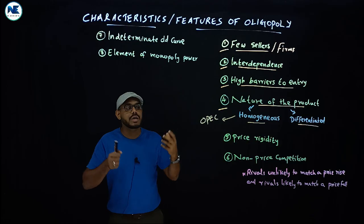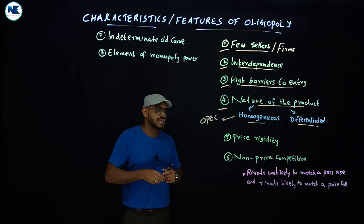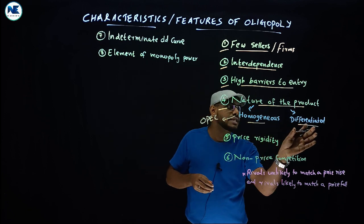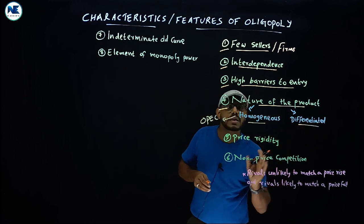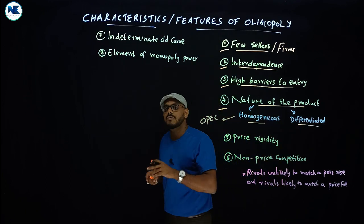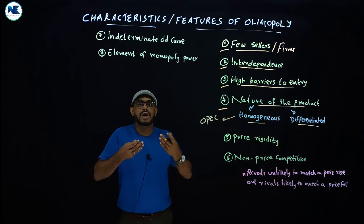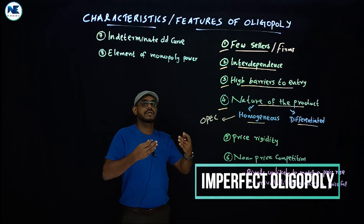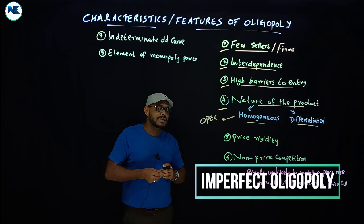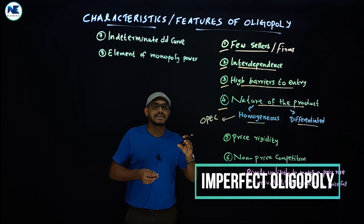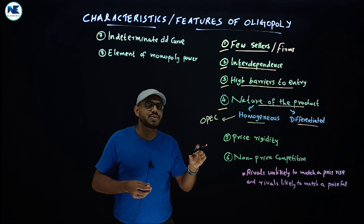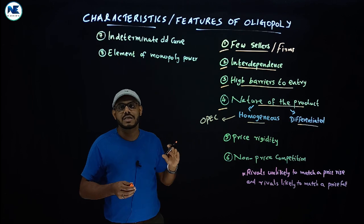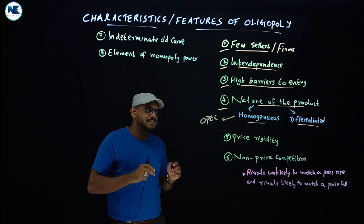Where firms produce differentiated products, that type of oligopoly is known as imperfect oligopoly or differentiated oligopoly. The important characteristic here is that firms actually produce differentiated products.